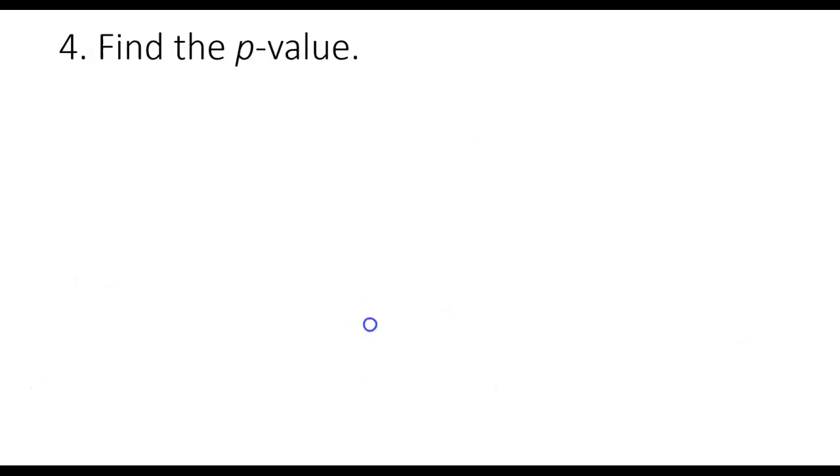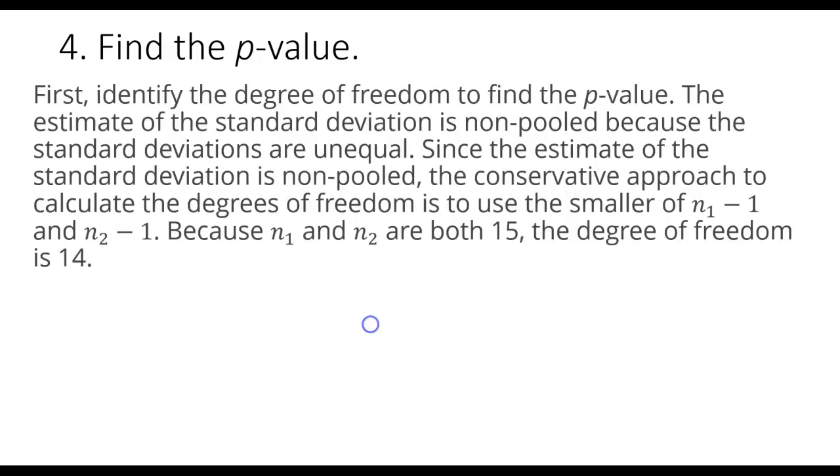Now I can use that test statistic to find the p-value. So using the table to find the p-value. First, we need to identify the degree of freedom to find the p-value. The estimate of the standard deviation is non-pooled because the standard deviations are unequal. Since the estimate of the standard deviation is non-pooled, the conservative approach to calculate the degrees of freedom is to use the smaller of n sub 1 minus 1 and n sub 2 minus 1. Now, that's just the sample size minus 1 for both of the items, but we know our sample size is the same. Both n sub 1 and n sub 2 are both 15, so when you subtract 1, we get the degree of freedom to be 14.